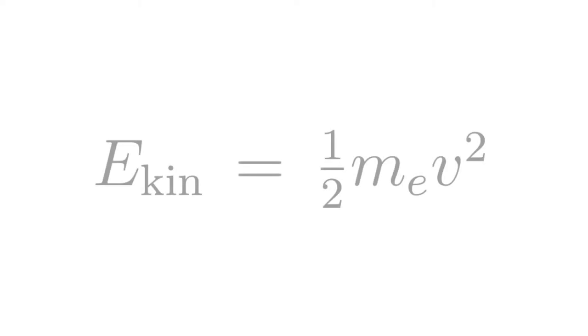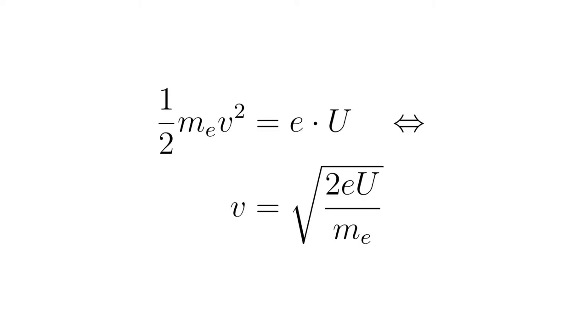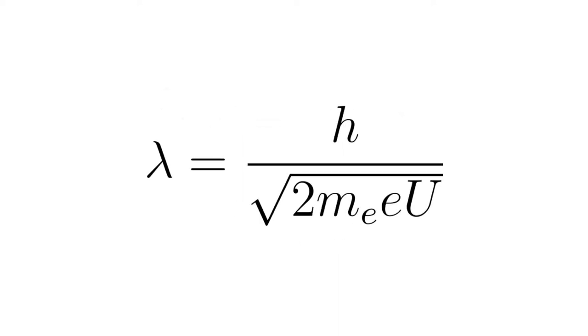The speed of the electrons can be determined by equating the kinetic energy of the electrons E_kin equals 1/2 m_e times v squared with the electrical energy E_el equals e times u. 1/2 m_e v squared equals e times u is equivalent to v equals square root of 2eu divided by m_e. This yields lambda equals h divided by square root of 2m_e times e u. This allows the determination of the de Broglie wavelength of electrons at any voltage value.